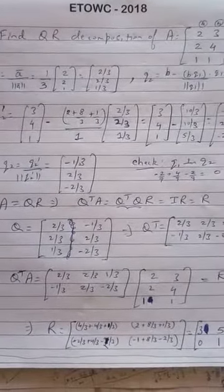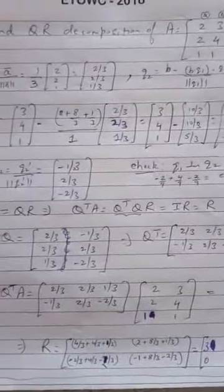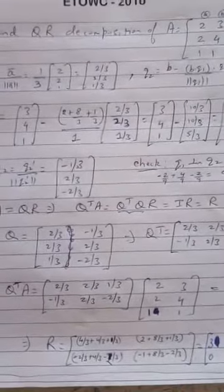In this video, I'm going to explain an example of QR decomposition of a given matrix. For the QR decomposition, we first need to apply the GS procedure to find the orthonormal vectors.